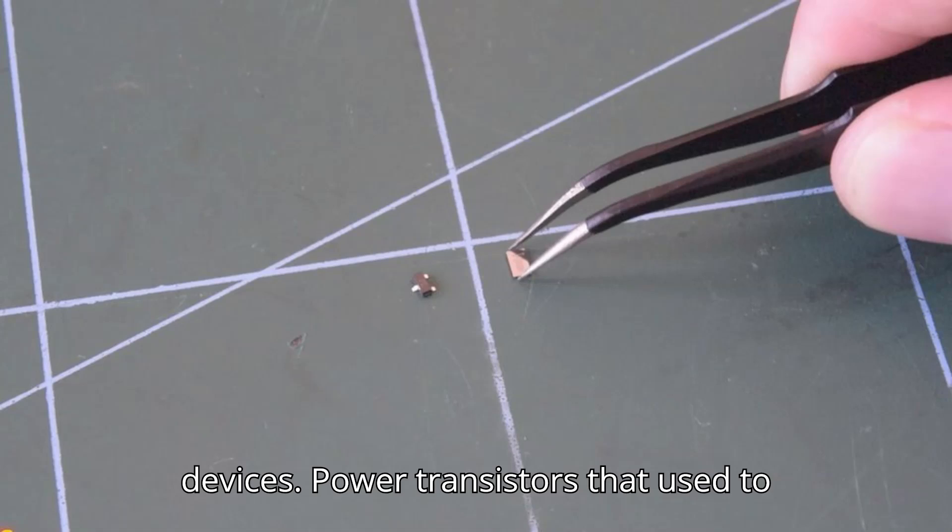Power transistors that used to be the size of a quarter are being replaced by more efficient units the size of a grain of rice.